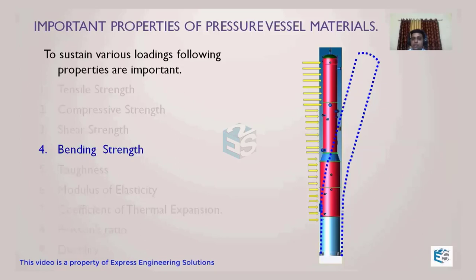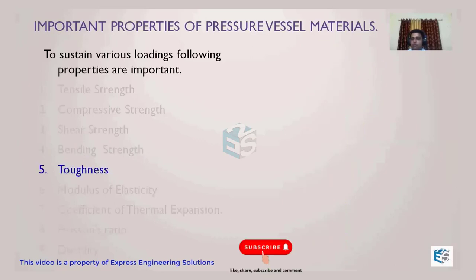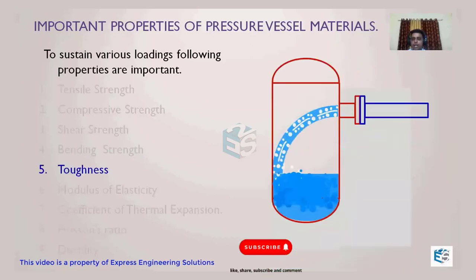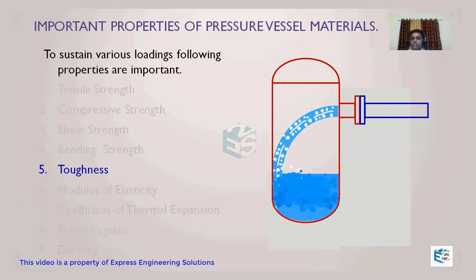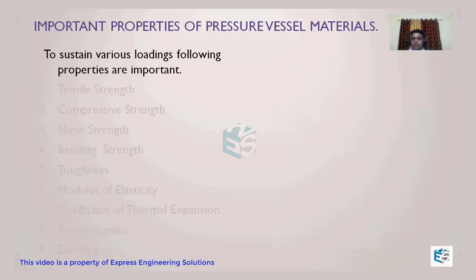The next very important property for pressure vessel design is toughness. Toughness is the ability of a material to withstand shock. Whenever fluid flow gives an impact on the walls, the material should not fail. A brittle material will suddenly fail under such impact. So toughness — the ability to absorb shock — is also very important.